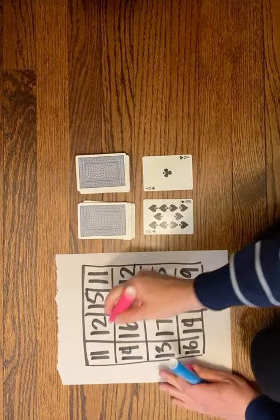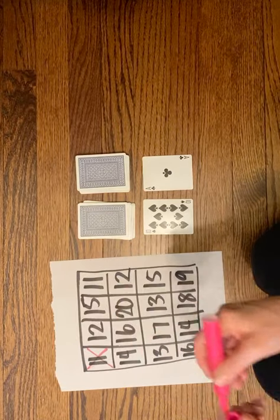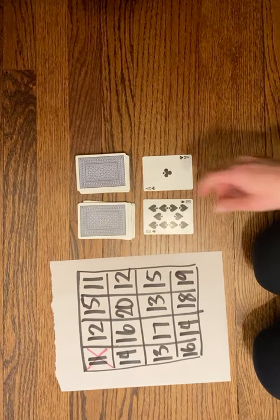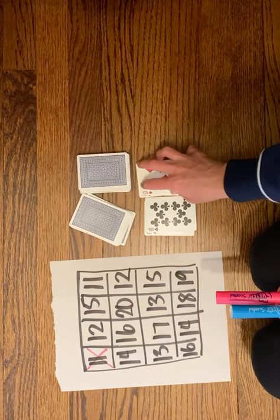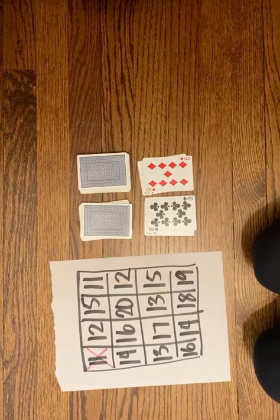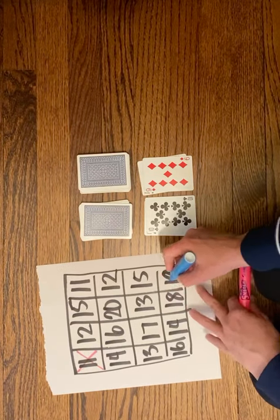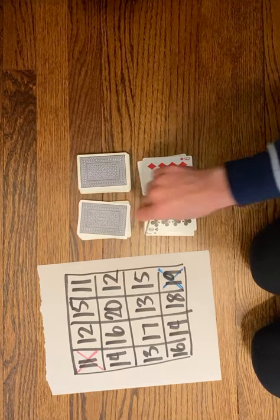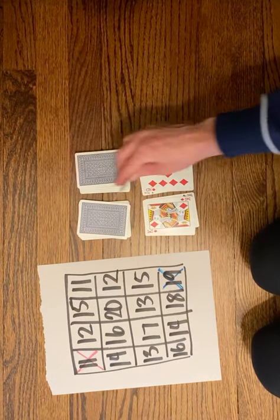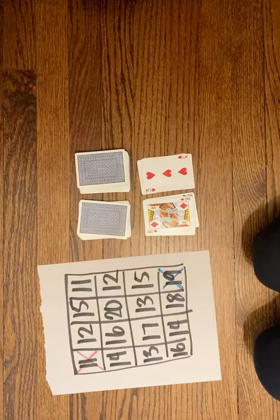Now it's blue's turn. Blue has 10 and 9, so 10 plus 9 is 19. If blue sees any 19s on the board, they can cross those off. Pink's turn: 10, because king is worth 10, plus 3 is 13.